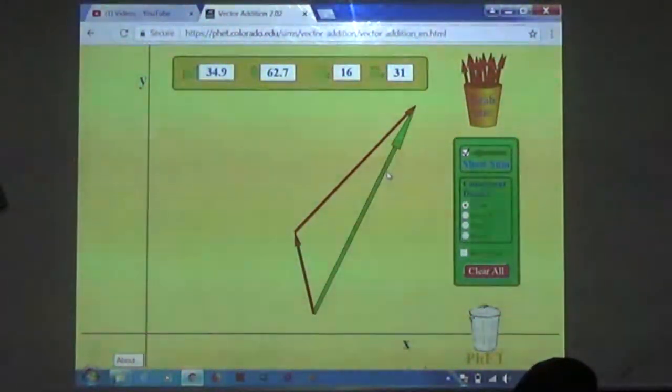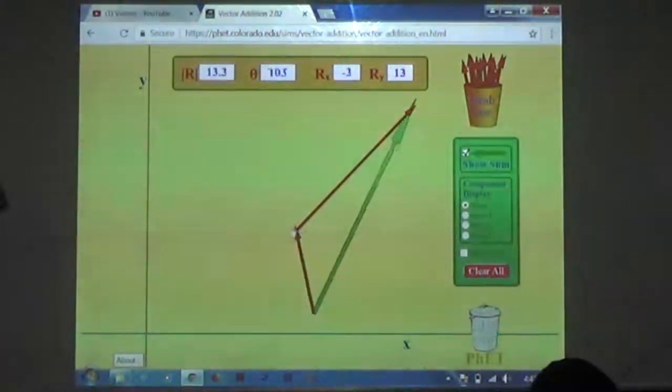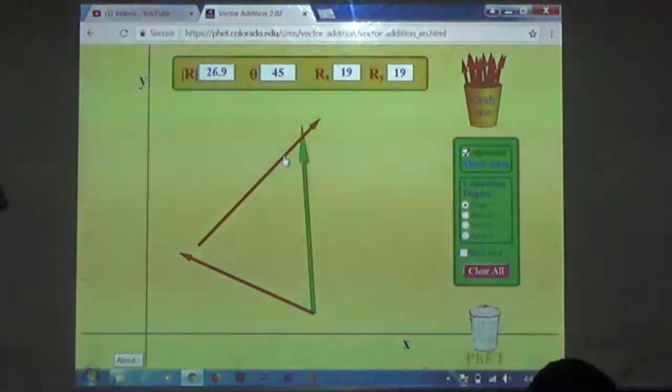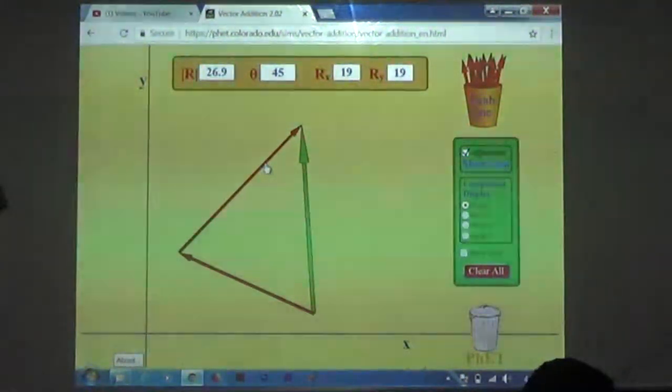So, first thing is that head to tail joint, nobody can do it. This way we can do it. I can change the magnitude of the angle, and this way we can change it. Just to arrange the right side and the other way we can show it.